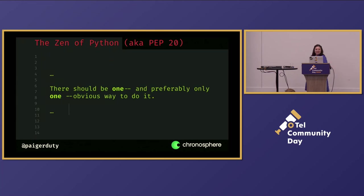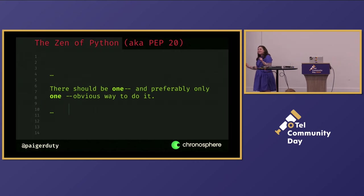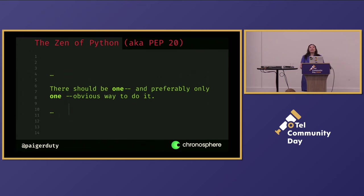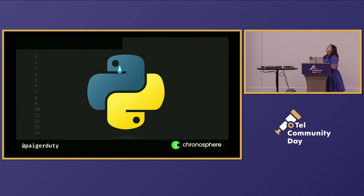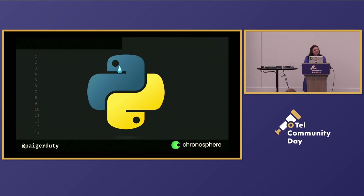Nestled in there is probably my most favorite, which is: there should be one, and preferably only one, obvious way to do it. Whatever it is — in our case today — is adding exemplars. But what is a little bit sad for us Pythonistas is in the world of open source observability, there's often not one, but two, three, or four different ways to do something, depending on your ecosystem and what you have set up.